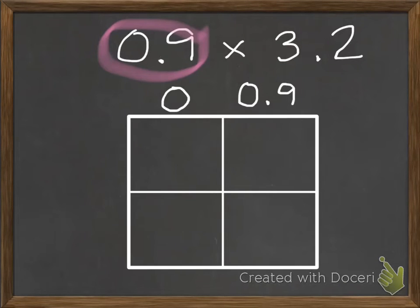Next, let's look at the number 3 and 2 tenths. When we break up 3 and 2 tenths into its whole decimal, we put the whole number first, 3, and then we put our decimal, 2 tenths.